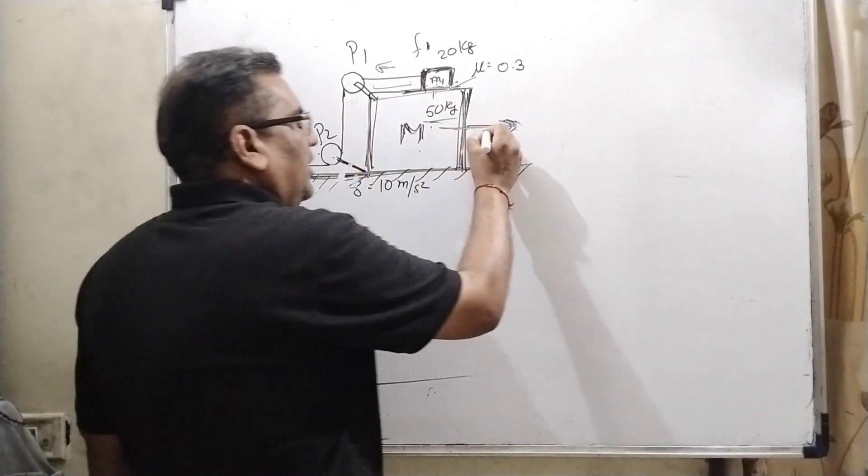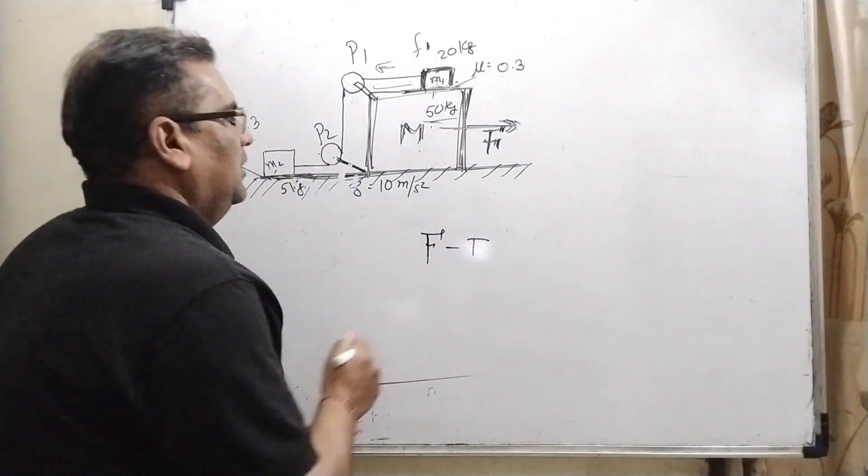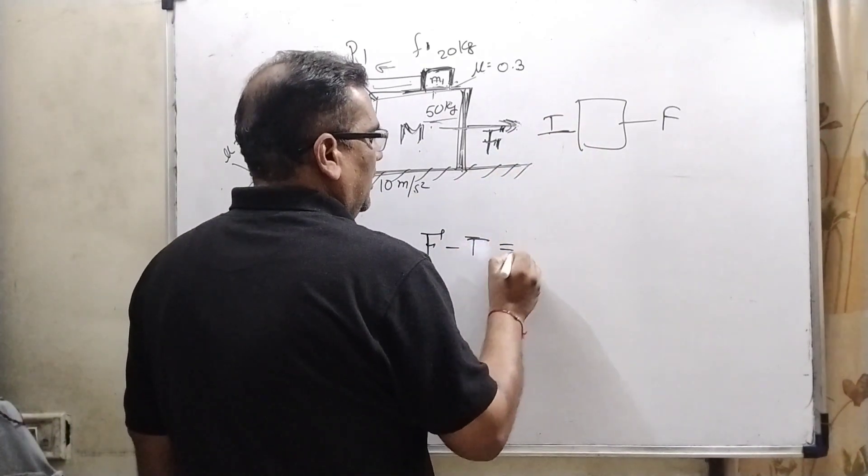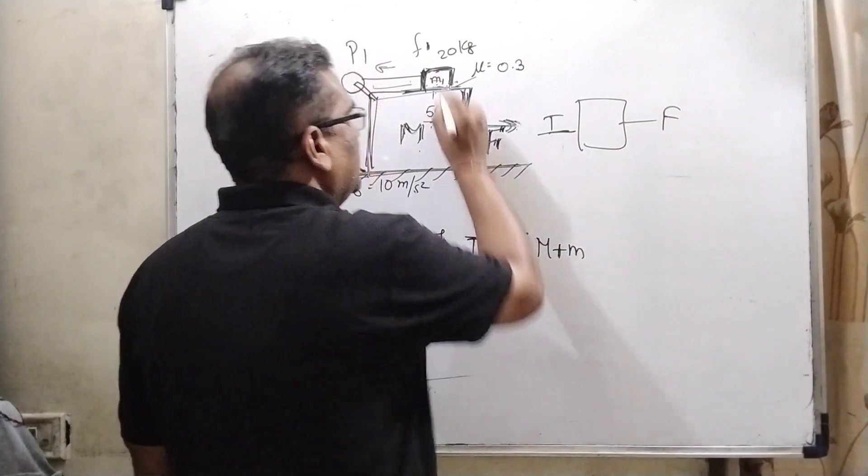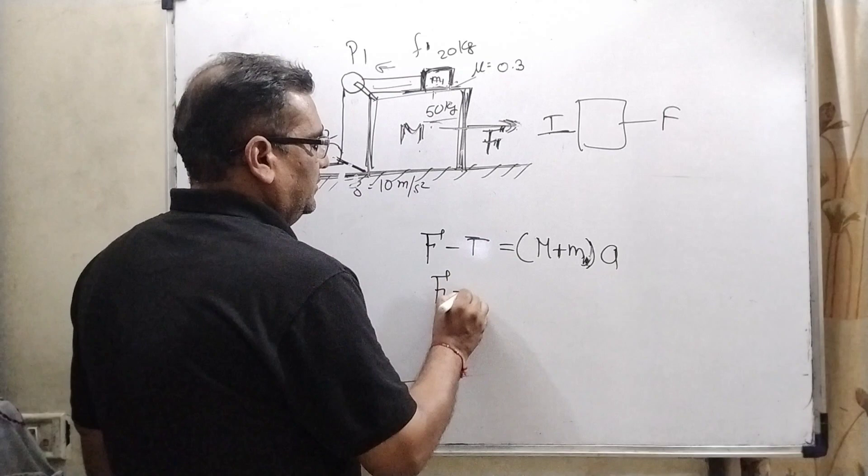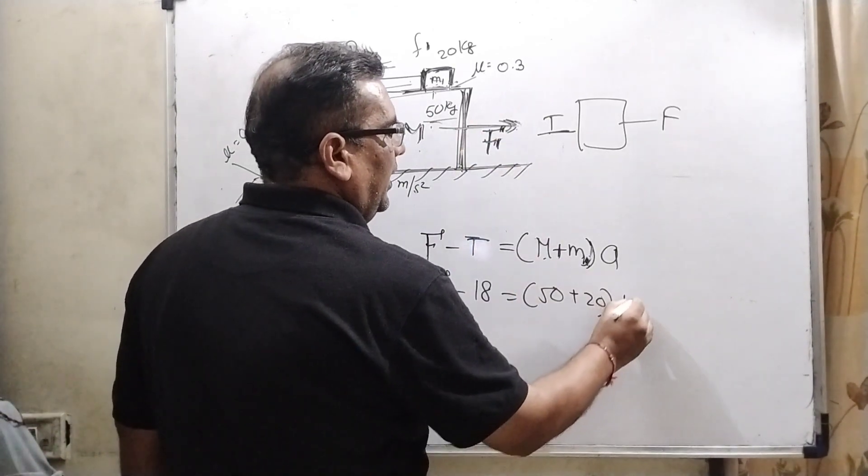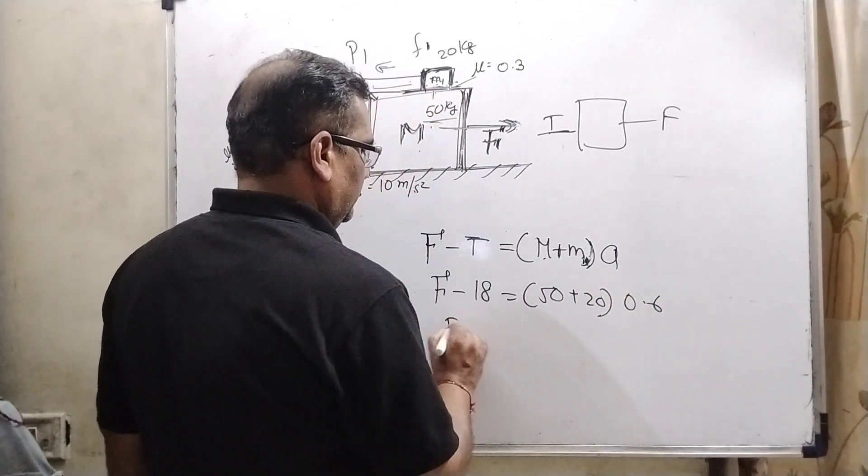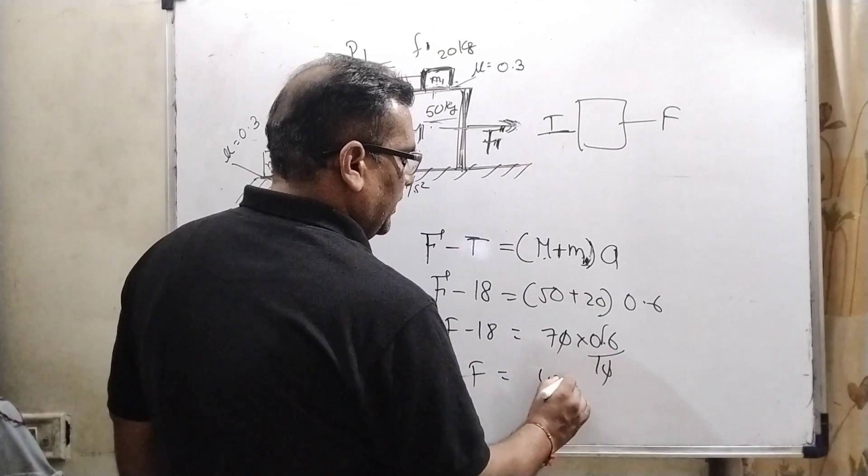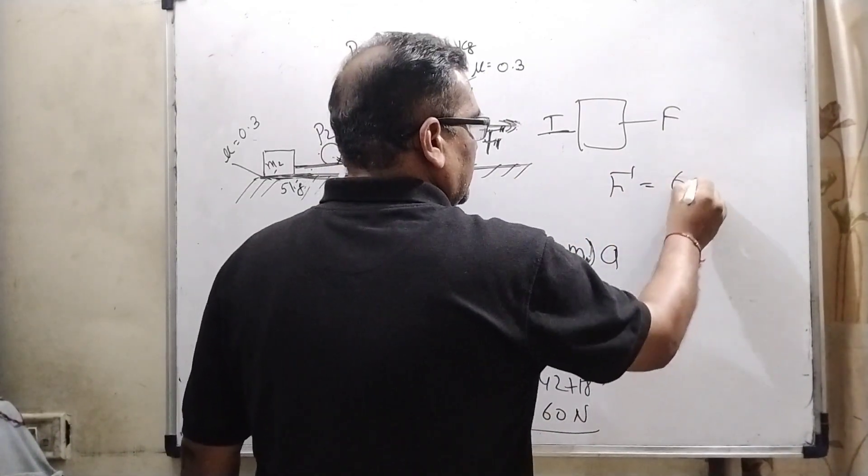Now next part, body is moving then we have to find out this force, acting force, this F capital F minus T because T is acting this direction, this is force and this is tension force, okay. So now equal to capital M plus this small M kept over it M1 and acceleration. Here F, 18 we have already find out, weight of this big block is 50, this is 20 and 0.6 acceleration. 70 into 0.6, F equal to 42 plus 18 then F equal to 60 Newton. So overall this force is 60 Newton.